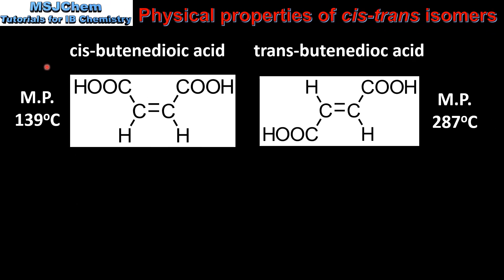In our next example we will compare the melting point of cis-butenedioic acid and trans-butenedioic acid. The trans isomer has a higher melting point than the cis isomer.